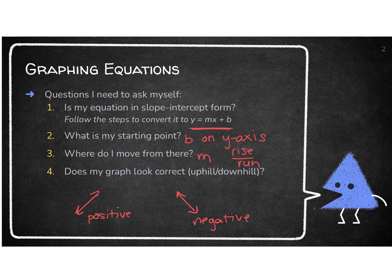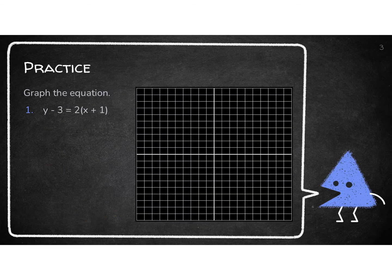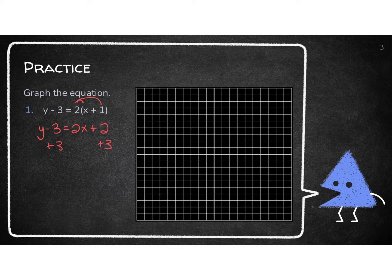Let's go ahead and look at some examples. This first equation, I need to be in y equals mx plus b — I am not, so I need to solve this equation for y first. I know that I do the parentheses first, so I am going to have y minus 3 equals 2x plus 2. And now I am going to get the y alone by adding 3 to both sides, so I am going to have y equals 2x plus 5.